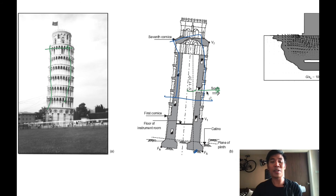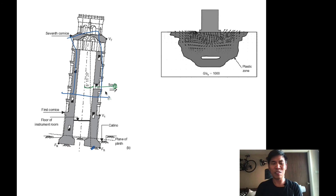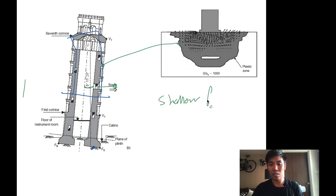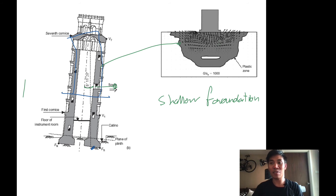If they didn't provide any solution or repair the tower, it might have failed. So how did they repair it? Before repairing, they had to analyze the situation. Professors from a college proposed a method: they simply removed soil below the high side using a flight auger — rotating it to remove the soil.